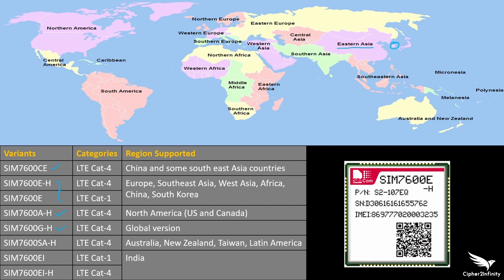The global variant SIM7600G-H supports all bands worldwide, so it doesn't matter which region you live in — you can use this variant everywhere. After that, SIM7600SA-H is supported in Australia, New Zealand, Taiwan, and Latin America. If you live in those regions, go with this modem. For India, there are two variants: SIM7600EI and SIM7600EI-H. If you live in the Indian subcontinent, you can go with EI or EI-H.